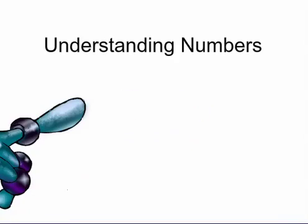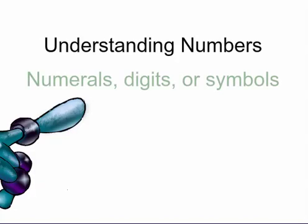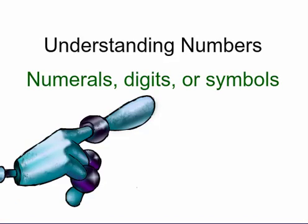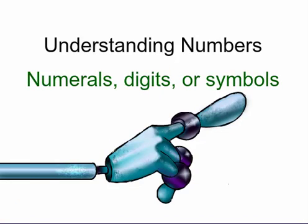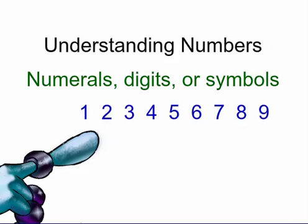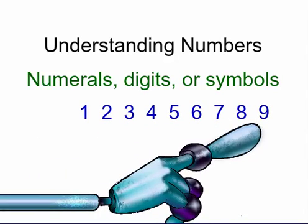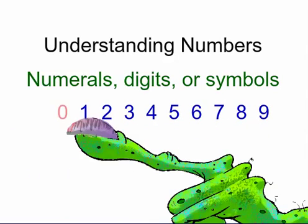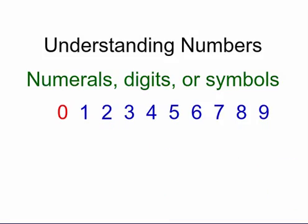There are ten numbers that are used in counting. They are called numerals, digits, or symbols. These whole numbers are one through nine. Don't forget zero. Yes, zero is a number.